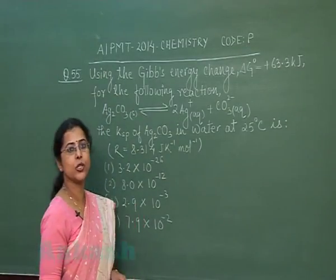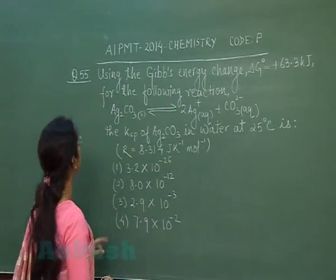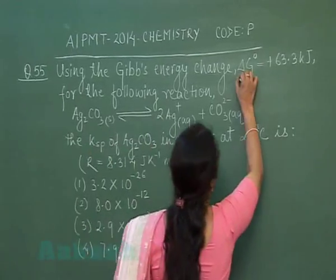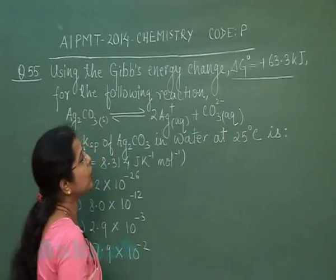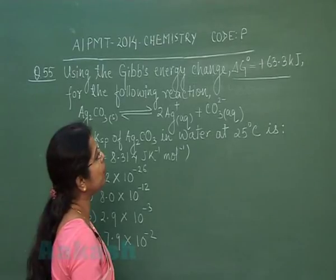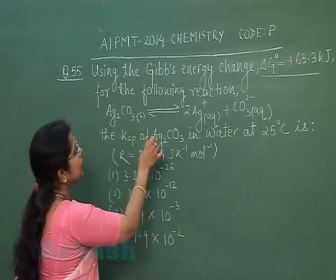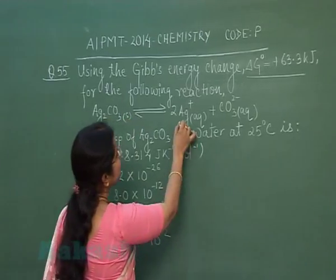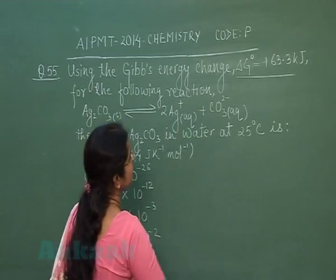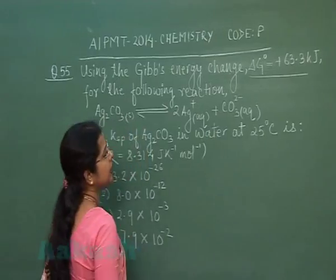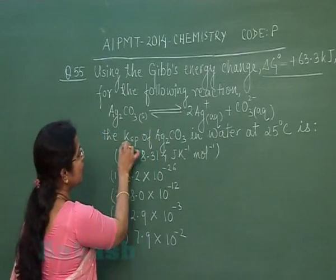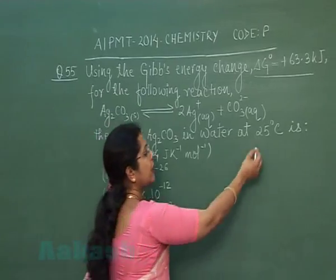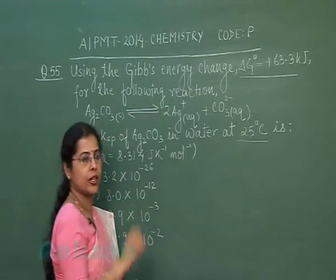Next question is question number 55. Using the Gibbs energy change ΔG° equals +63.3 kilojoules for the following reaction — silver carbonate decomposes to 2 Ag⁺ (aqueous) plus carbonate ion (aqueous) — the solubility product of silver carbonate in water at 25 degrees centigrade is?